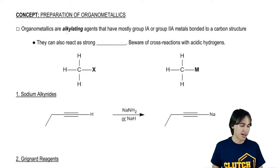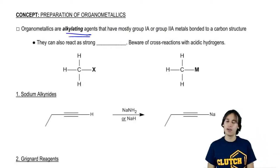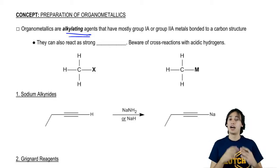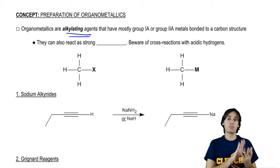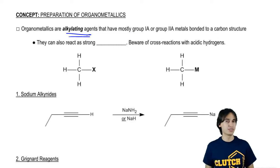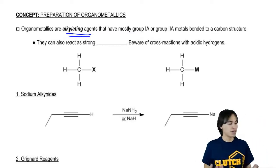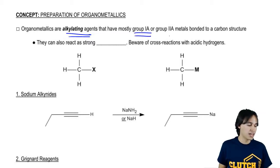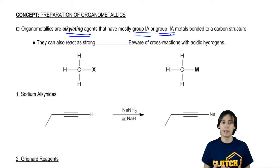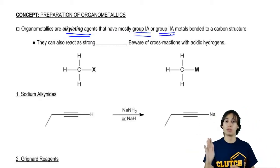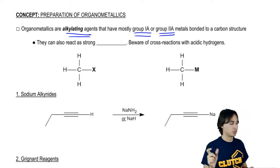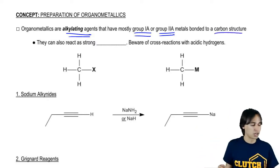All they are is they're alkylating agents. What is an alkylating agent? It means that I'm going to be able to use this reagent to put an alkyl group on something else. And what it's going to consist of is usually a group 1A or 2A metal, so I'm talking about the first and the second column of the periodic table. Those metals are going to be directly bonded to a carbon structure.